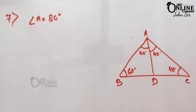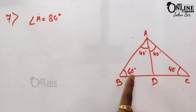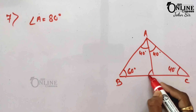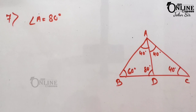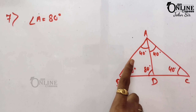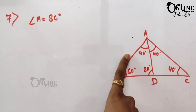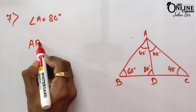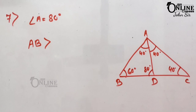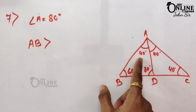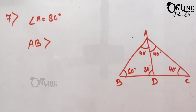In triangle ABD: one angle is 60°, another is 40°, so the third angle = 80°. The opposite side of the greater angle is always greater. So AB (opposite 80°) is greater than BD (opposite 40°), giving us AB > BD.